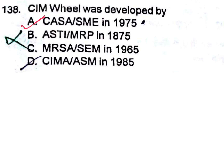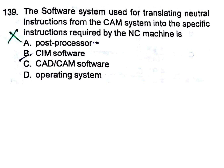The software system used for translating neutral instructions from the CAM system into the specific instructions required by the NC machine is: A) Post processor, B) CIM software, C) CAD/CAM software, D) Operating system. The answer is post processor. This type of question IES also asks.